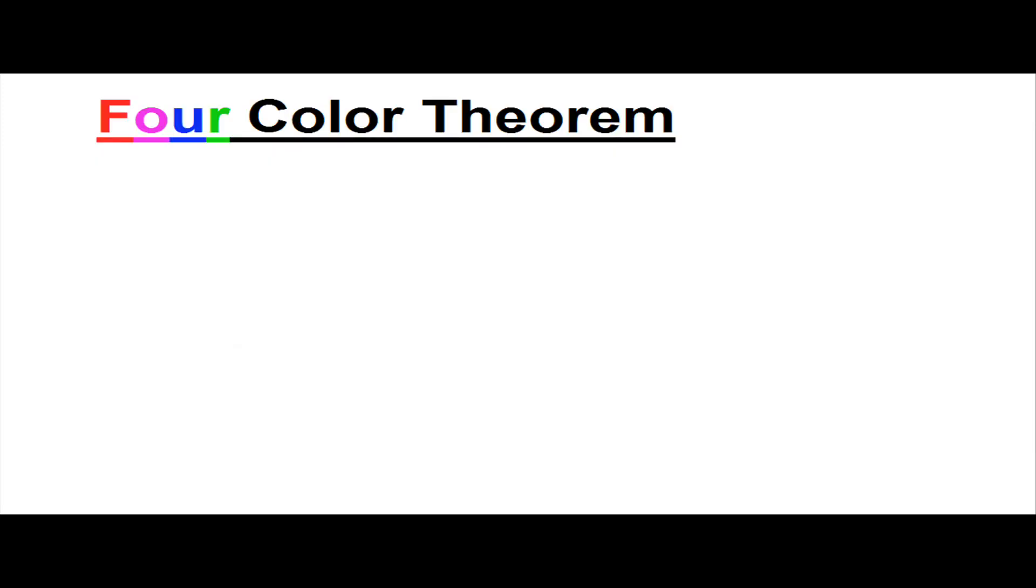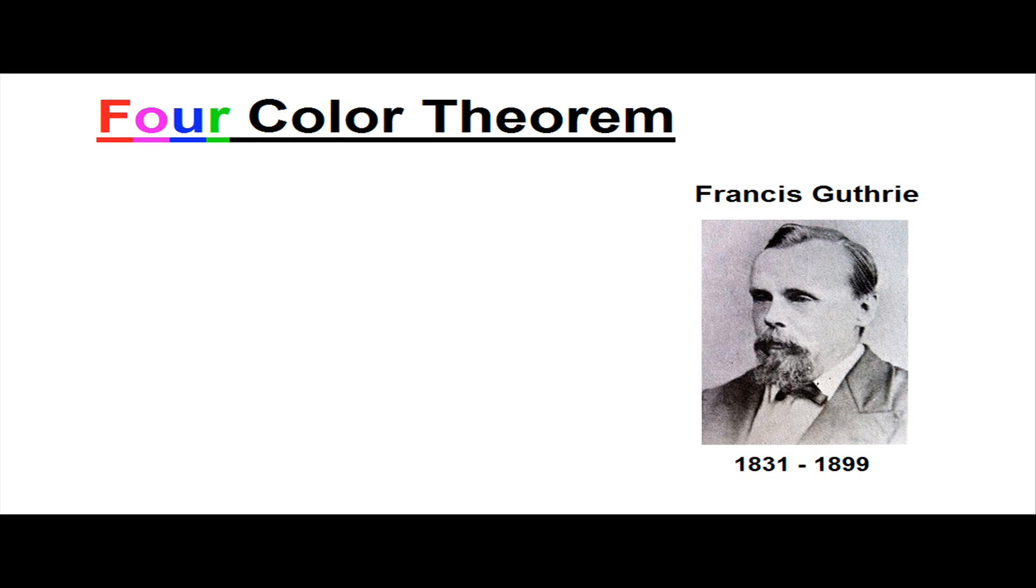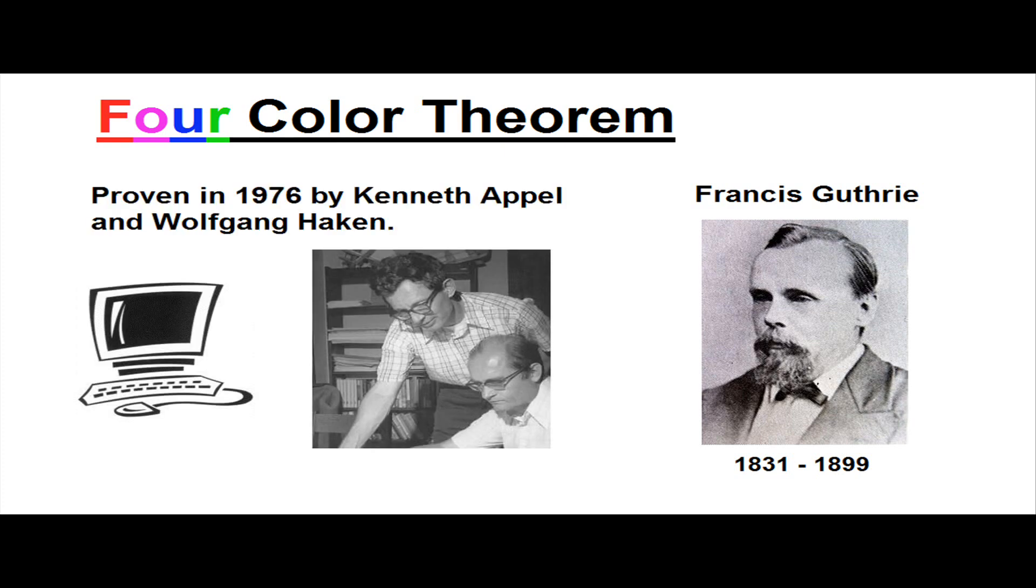This principle is called the Four-Color Theorem and was first discovered by Francis Guthrie in 1852. But Guthrie didn't actually prove the theorem. In fact, it wasn't proven until 1976, when it was the first major theorem to be proven using a computer.